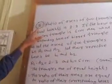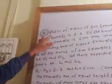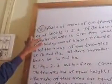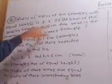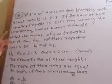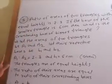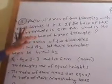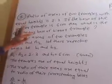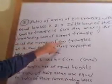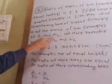Question number 3. Ratio of areas of two triangles with equal height is 2 to 3. If the base of the smaller triangle is 9 cm, then what is the corresponding base of the bigger triangle? Let the areas of two triangles be A1 and A2.